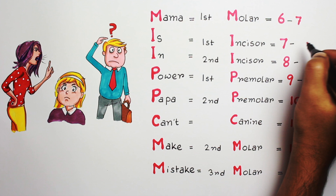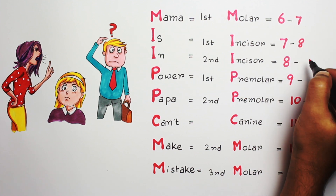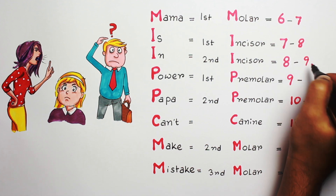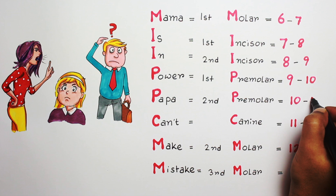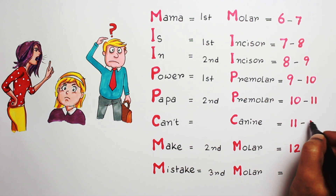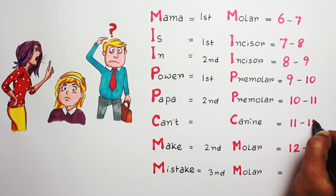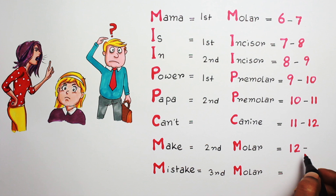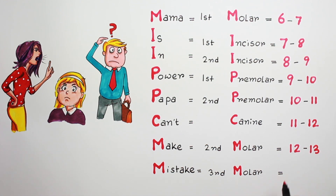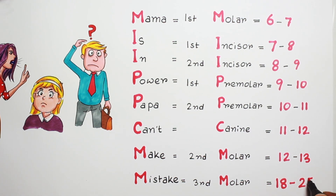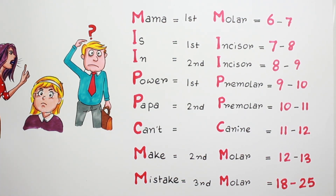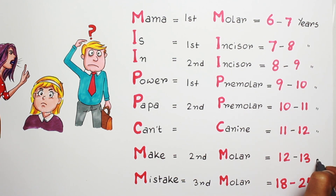The first incisor erupts in between 7 to 8 years. The second incisor in between 8 to 9 years. Then first premolar in between 9 to 10 years. Then second premolar in between 10 to 11 years. Then canine in between 11 to 12 years. Then second molar in between 12 to 13 years. And last of all, the third molar which erupts in between 18 to 25 years.